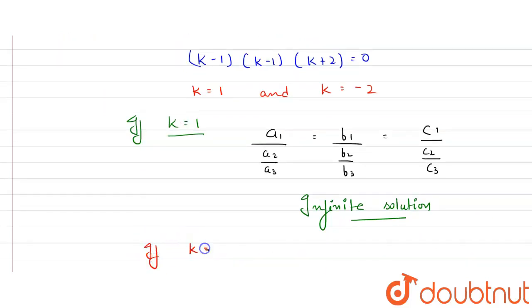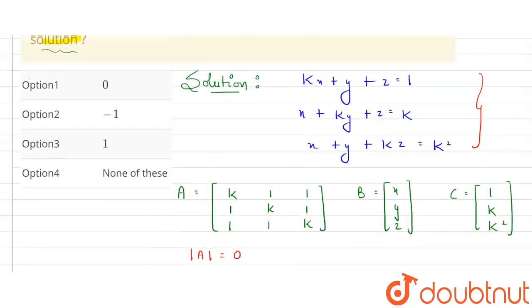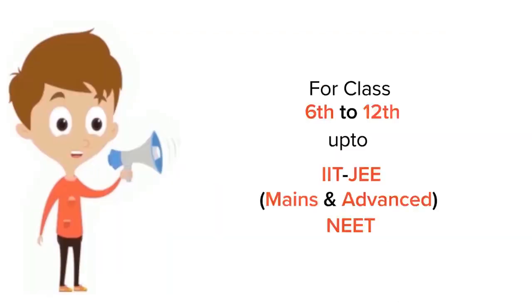Checking k = -2: putting this value gives no solution. So the value of k for no solution is -2. Looking at the given options, -2 is not listed, so the answer is 'none of these'.